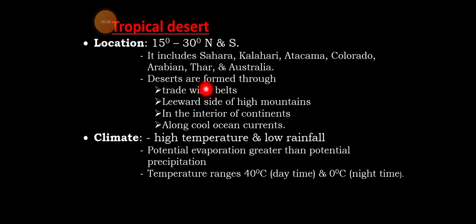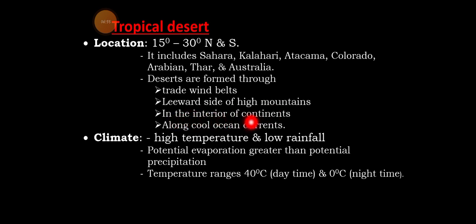Deserts are formed through four major causes: one, trade wind belt; two, the lower side of a high mountain; three, interior of the continent; and four, along cool ocean currents.